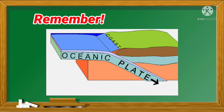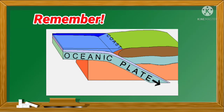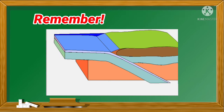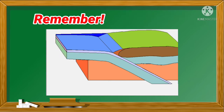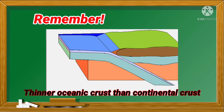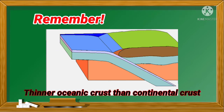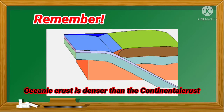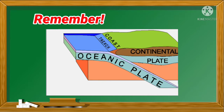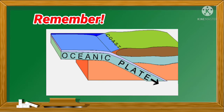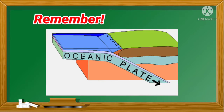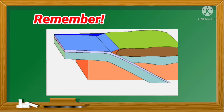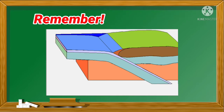Remember that there are two types of crusts: the continental crust and oceanic crust. Though the oceanic crust is thinner than the continental crust, the oceanic crust is denser than the continental crust. This idea about crust is very important to help you understand the geologic processes that occur in the different types of plate boundaries.